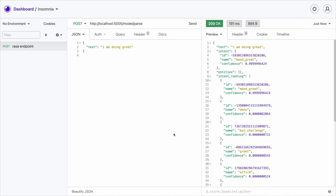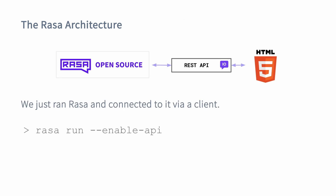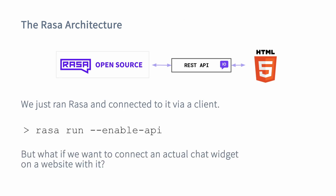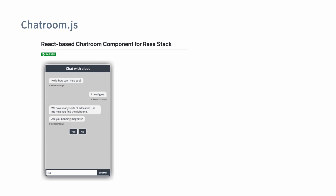So we just communicated with the Rasa assistant over HTTP by using a REST client. We could now use this as a starting point to start writing our own frontend components, but instead of doing that, I'd like to use a widget that already exists. There's a third-party component called chatroom.js, and I'd like to use that. It comes with React components, so it's pretty easy to get started with. It's worth mentioning that this project is not officially supported by Rasa.